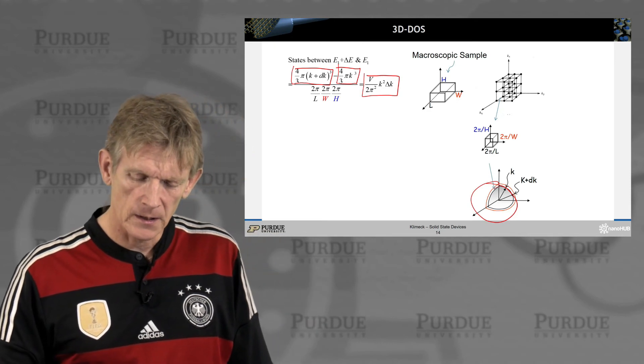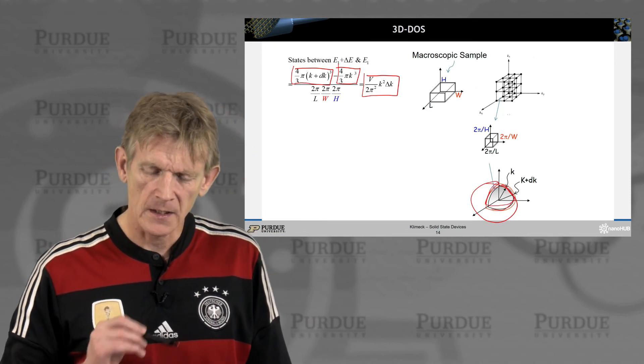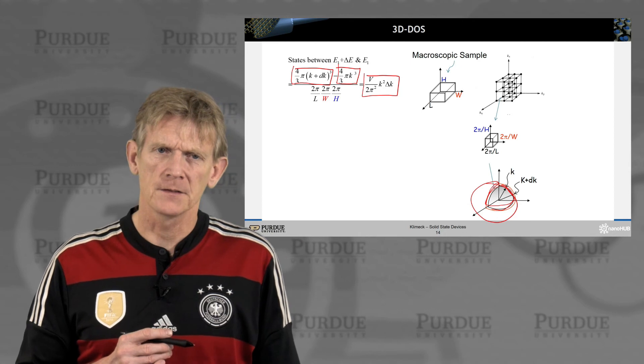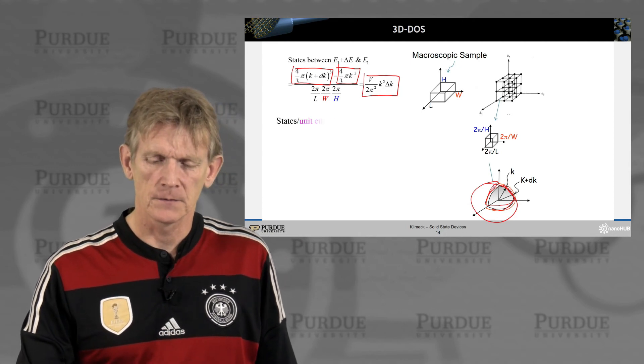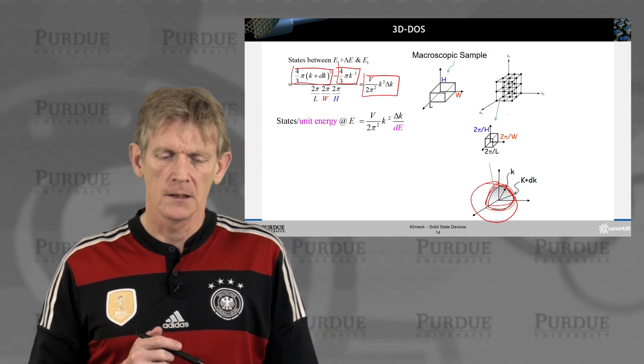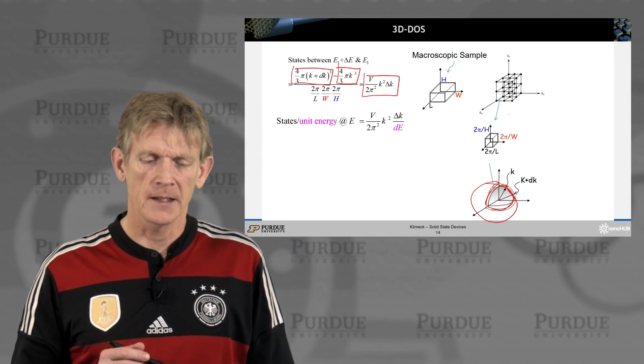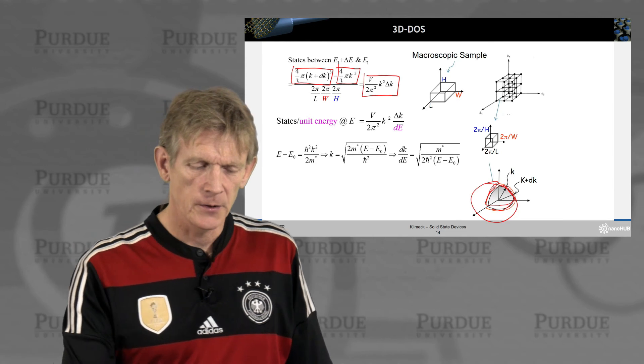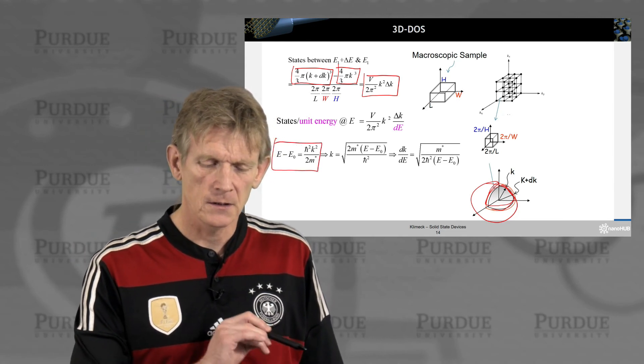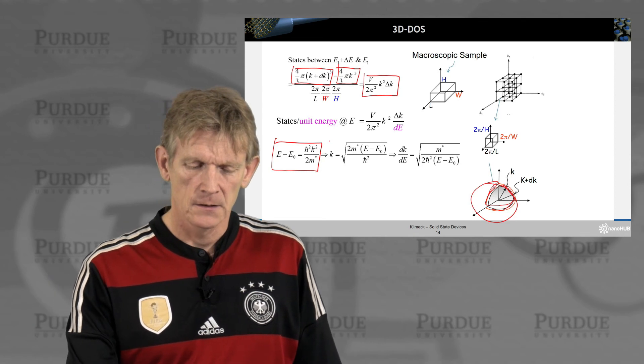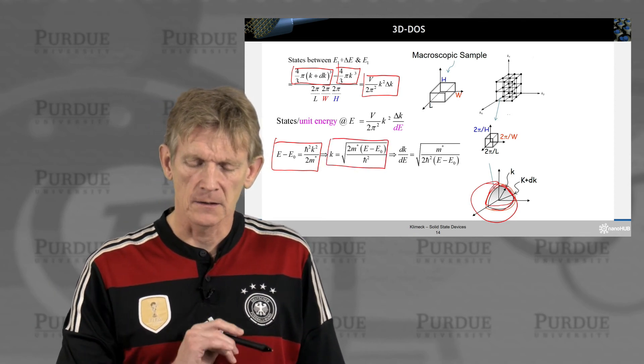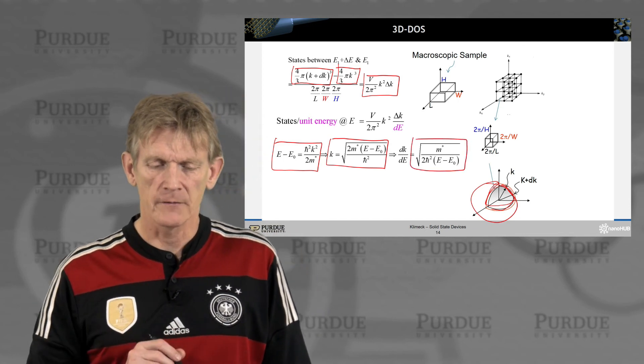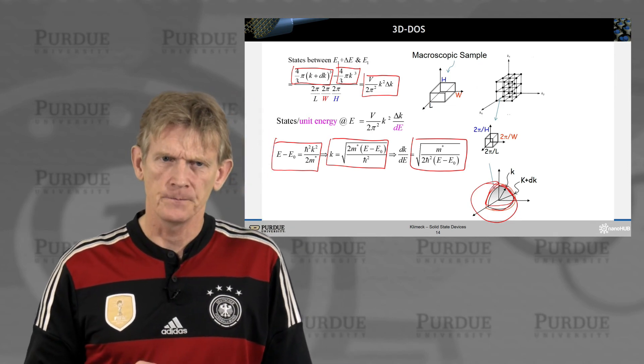So here you see the volume of k cubed. 4 over 3 π k cubed is the volume of a sphere of radius k. If we make the radius slightly larger, k plus delta k, that's 4 over 3 π (k plus delta k) cubed. We want to know the difference in k volume between those two. We take the difference and normalize to the overall k-space volume, which is 2π over L, 2π over W, 2π over H. We get, in 3D, that the states between a certain energy sliver, E plus delta E and E1, is V over 2π squared k squared delta k.